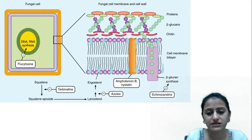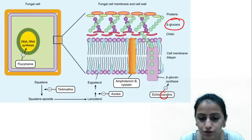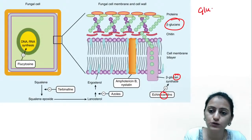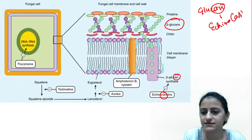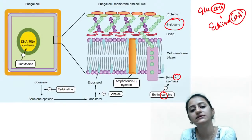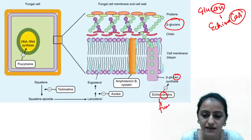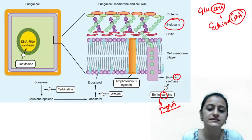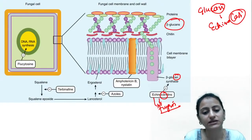The next group inhibits glucan synthesis — specifically, beta-glucan synthesis in the cell wall. Remember: echinocandins inhibit your beta-glucan synthesis. What comes under the echinocandins? The '-fungin' drugs — anidulafungin, micafungin, caspofungin — all these are echinocandins. Remember: fungin-wala drugs are echinocandins.